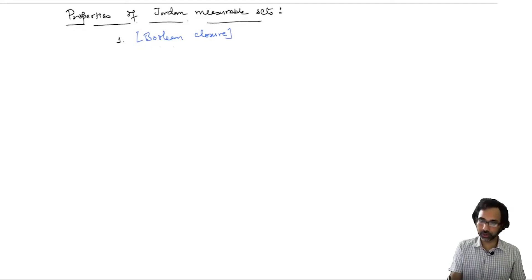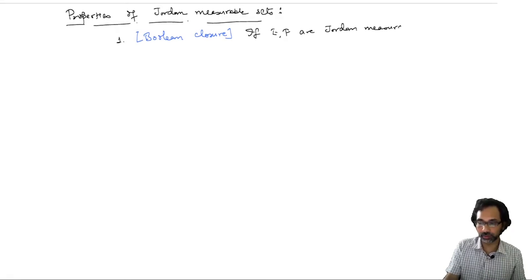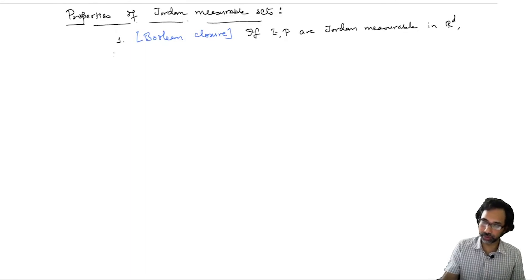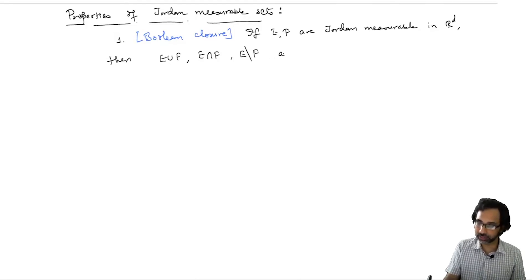The first of these properties is called Boolean closure: if E and F are Jordan measurable subsets of R^d, then the union E∪F, the intersection, the set difference, as well as the symmetric difference are all Jordan measurable.